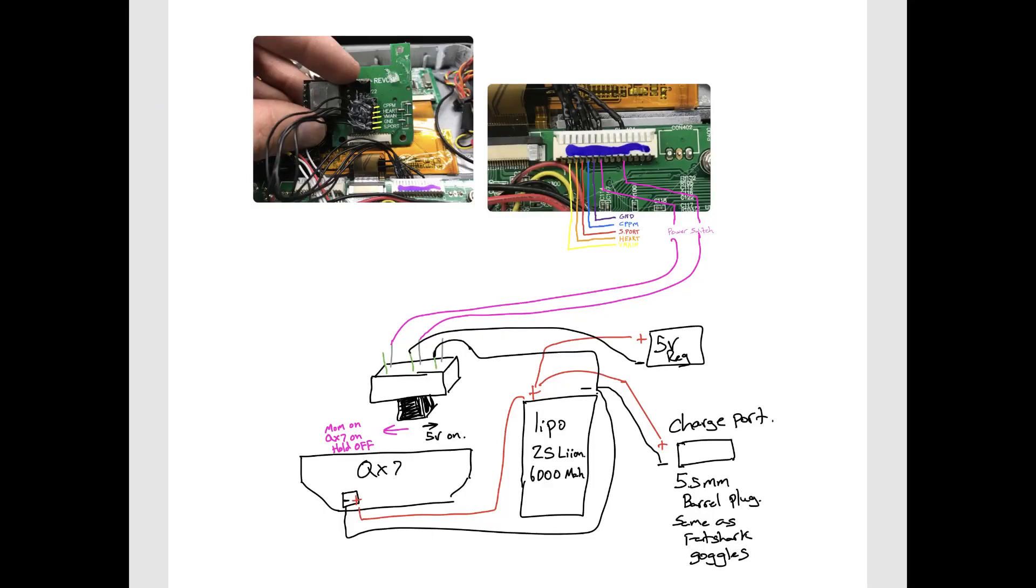Now let's take a look at a diagram I drew up that shows how the wires go from the crossfire main board and bypass the JR module port and go directly into the crossfire JR adapter. Feel free to pause it here and see how everything goes.